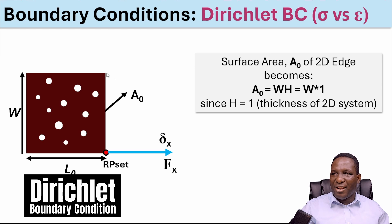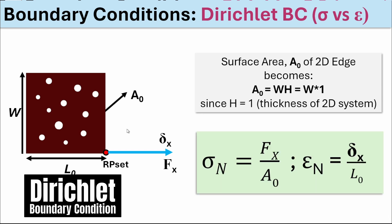These are the parameters that are important to get the stress strain data. The surface area will be the area of that edge which is the width times height. In this case our depth or height is 1 because it's a 2D system. Our stress will be calculated as the reaction force of the reference node divided by the cross-sectional area, while the strain is the displacement of that reference node divided by the total length of the material.